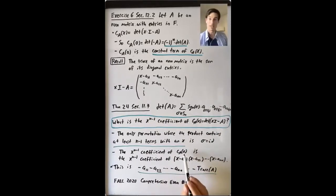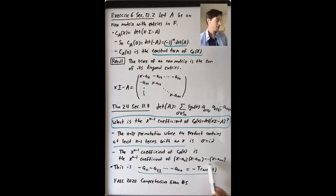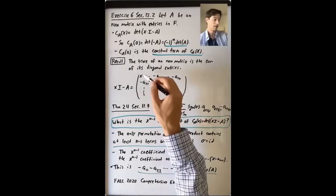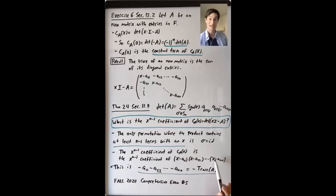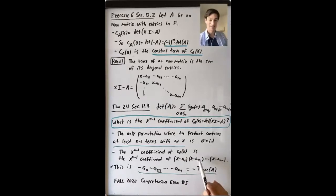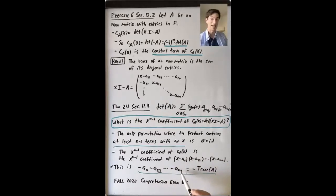So the X^{n-1} coefficient of the characteristic polynomial is the X^{n-1} coefficient of the product (X - A_{11})(X - A_{22})...(X - A_{nn}), the product of the diagonal entries. You have n binomials and you pick n minus 1 of them to contribute X, and the last one contributes minus A_{ii}. What you get is minus A_{11} minus A_{22} minus ... minus A_{nn}, which is the negative of the trace of A.